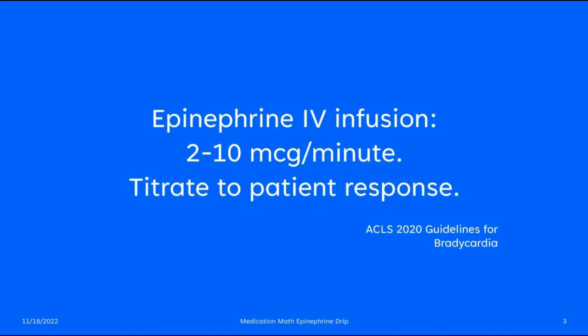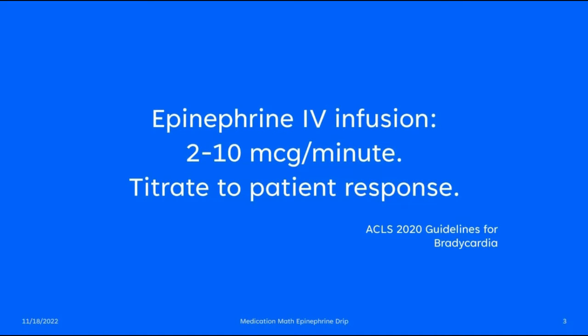What formula are we going to use to do our calculations? You pull out your reference guide out of your pocket and you find a card that has micrograms per minute as a calculation. Here's the formula: micrograms times 60. What's that 60 about? Well, if you look over here on the right side of the formula, we have to end up at milliliters per hour because that's how IV pumps get programmed.